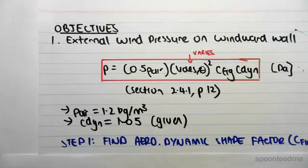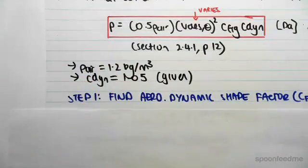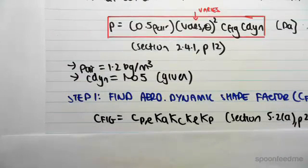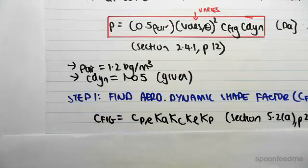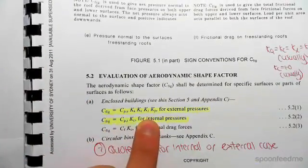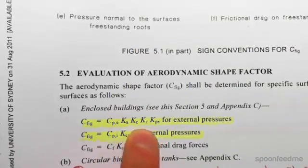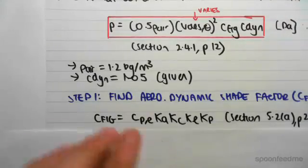The first thing we need to do is find the aerodynamic shape factor, C-fig. On page 27, we have a formula for C-fig: C-P-E times K-A times K-C times K-L times K-P, for external pressures. The windward wall is an external pressure, so that formula applies here.